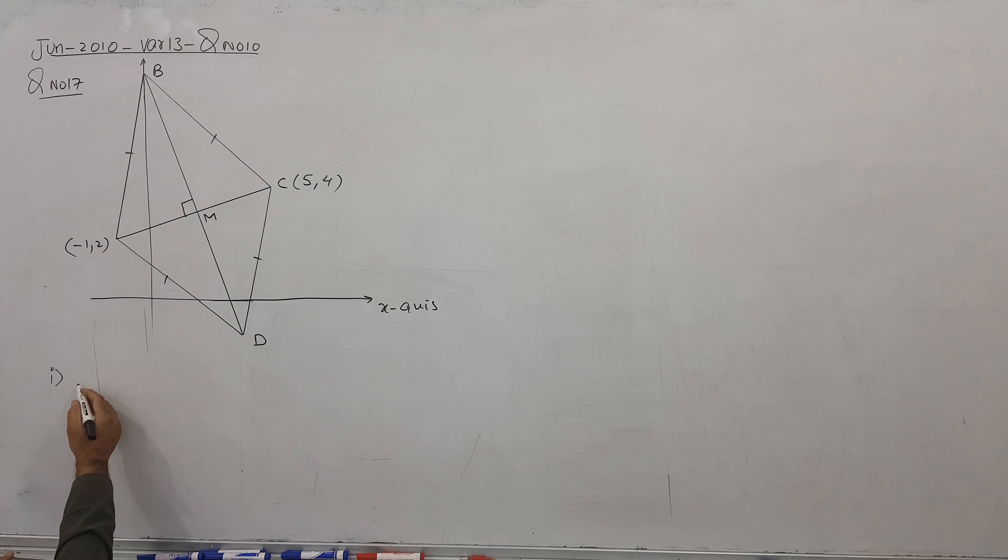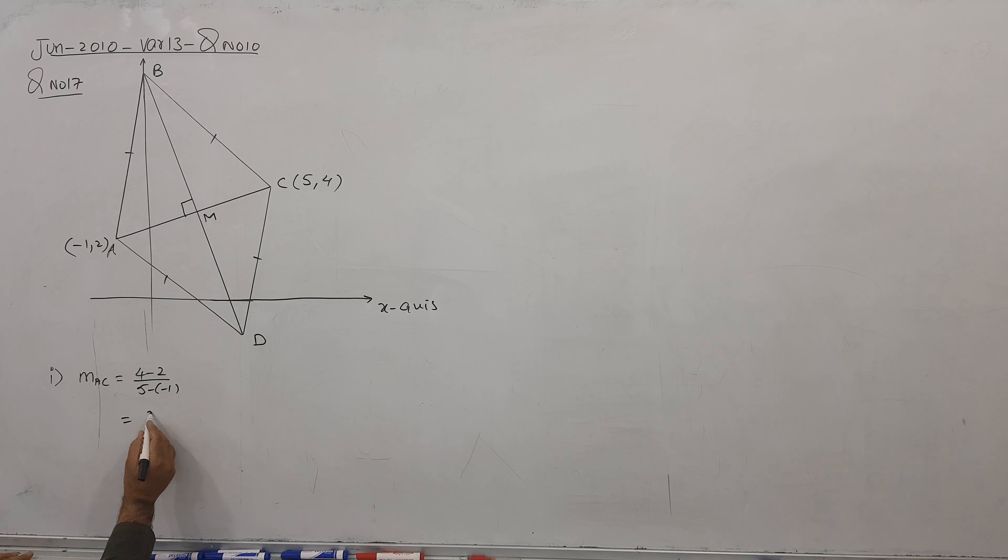First of all, get the gradient. I can label this as point A. What is the gradient of AC? So gradient of AC, I can say y2 minus y1 over x2 minus x1. I got 2 by 6, so gradient of AC is coming 1 by 3.